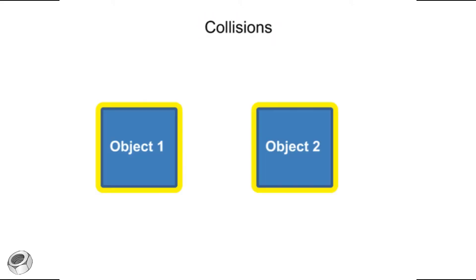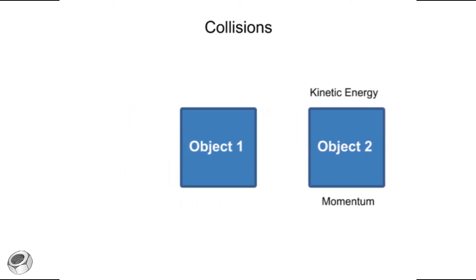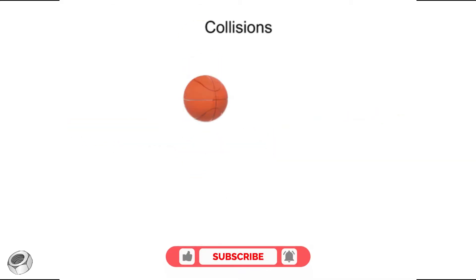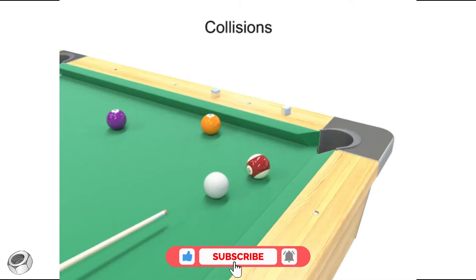Collisions happen when two or more objects come into contact with each other and a transfer of momentum and kinetic energy occurs. Collisions occur every time you hit a baseball, bounce a basketball, or play pool.